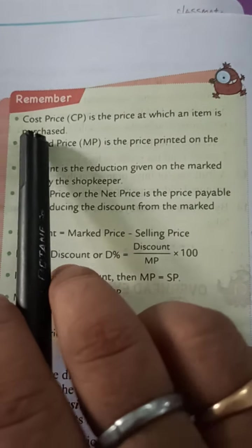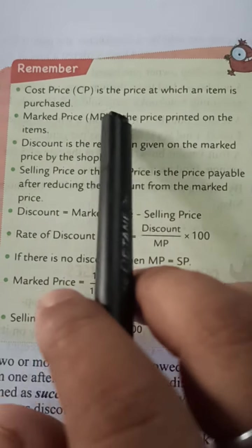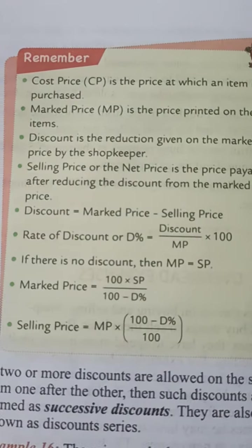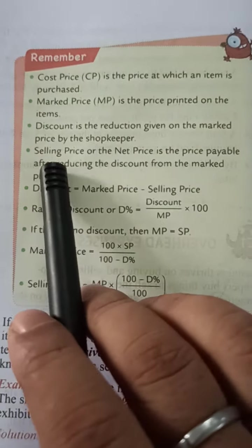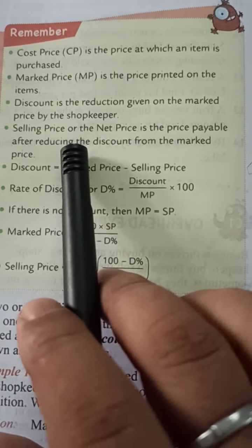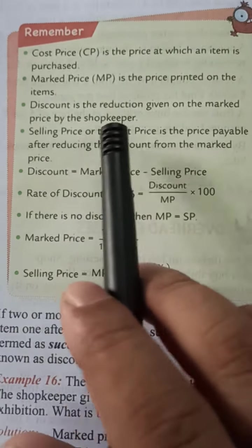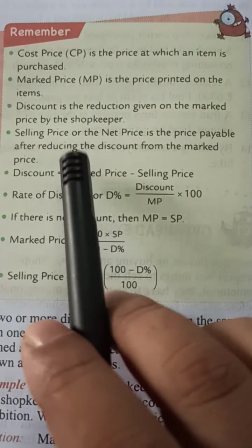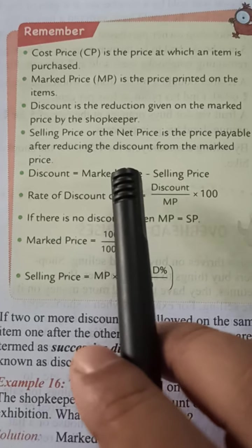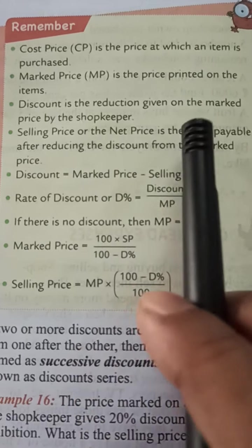Cost price is the price at which an item is purchased. Mark price is the price on the item. Discount is the reduction given on the mark price. Selling price or net price is the price payable after reducing the discount from the mark price.